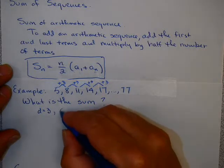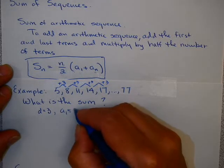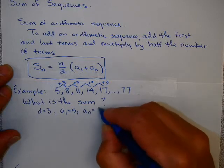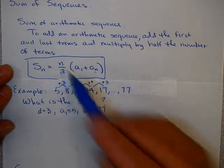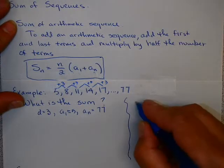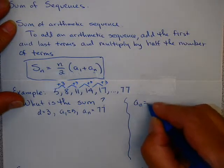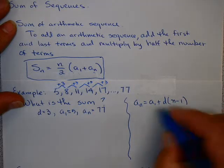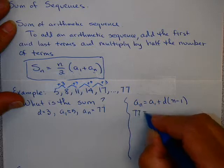Now, I know the first term is 5, and I know the last term is 77. However, I do not know how many terms there are. So I may need to use that formula for the nth term of an arithmetic sequence to help me figure that out.